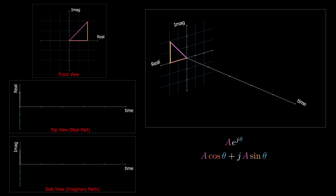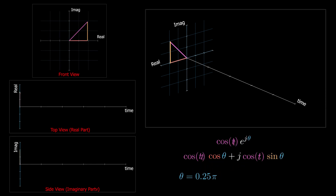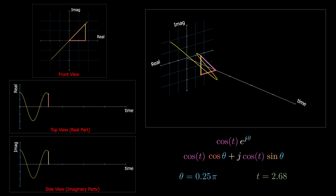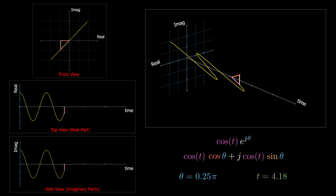If the magnitude is variable — for instance if a is a cosine function of time — then at each instant of time we have a different magnitude value with the same phase angle, and hence different real and imaginary parts.